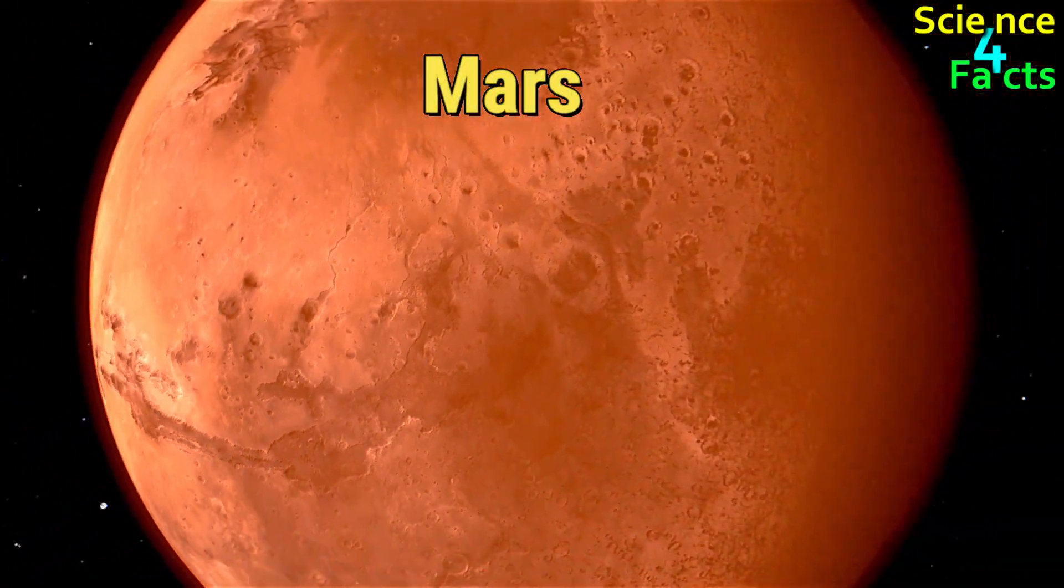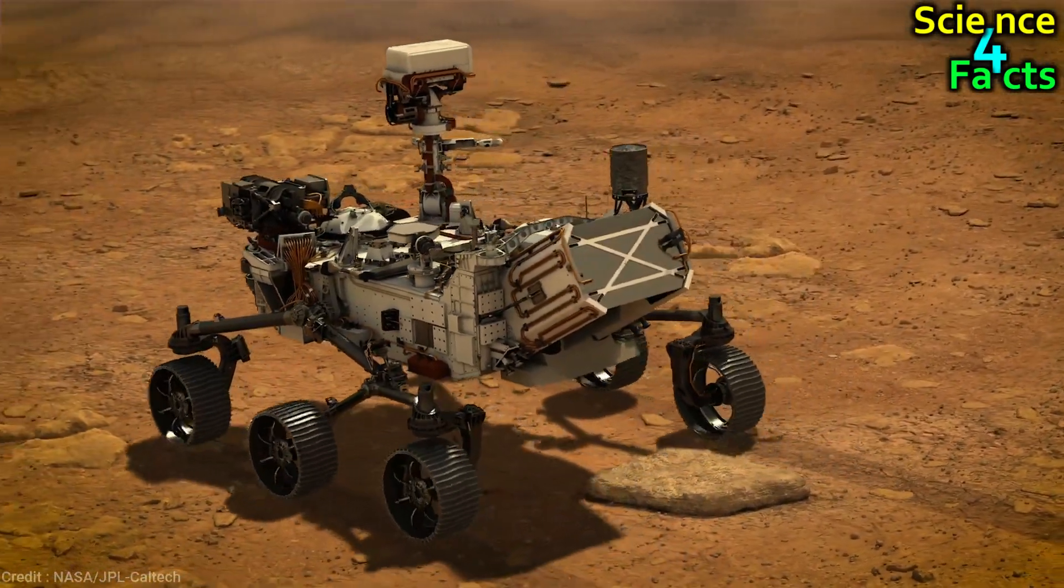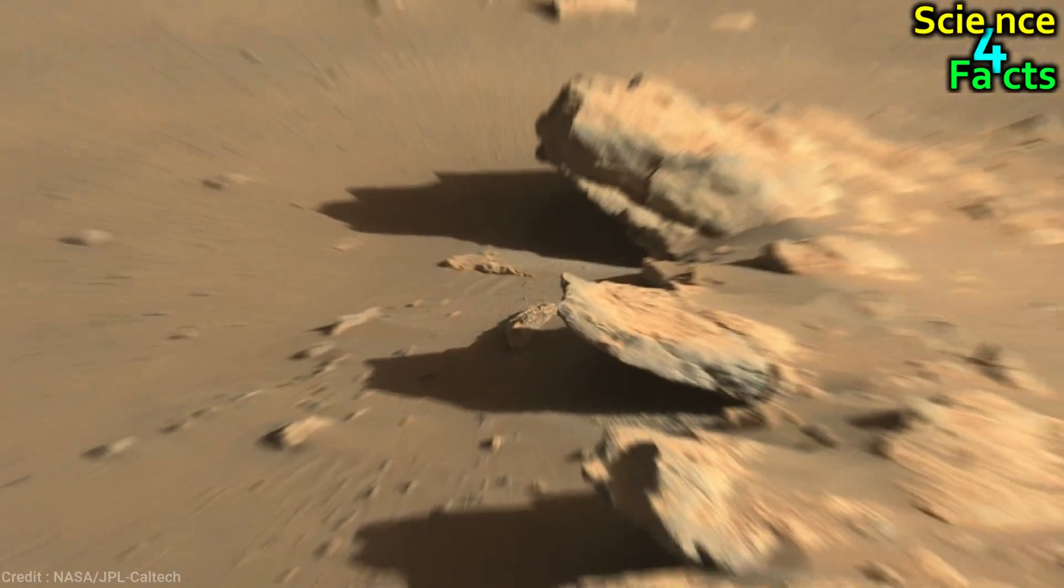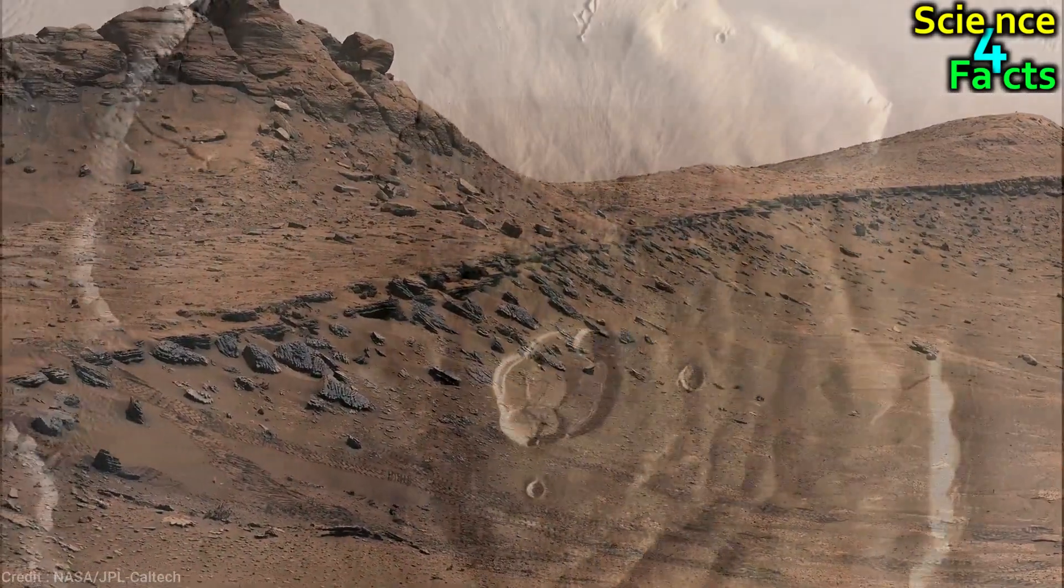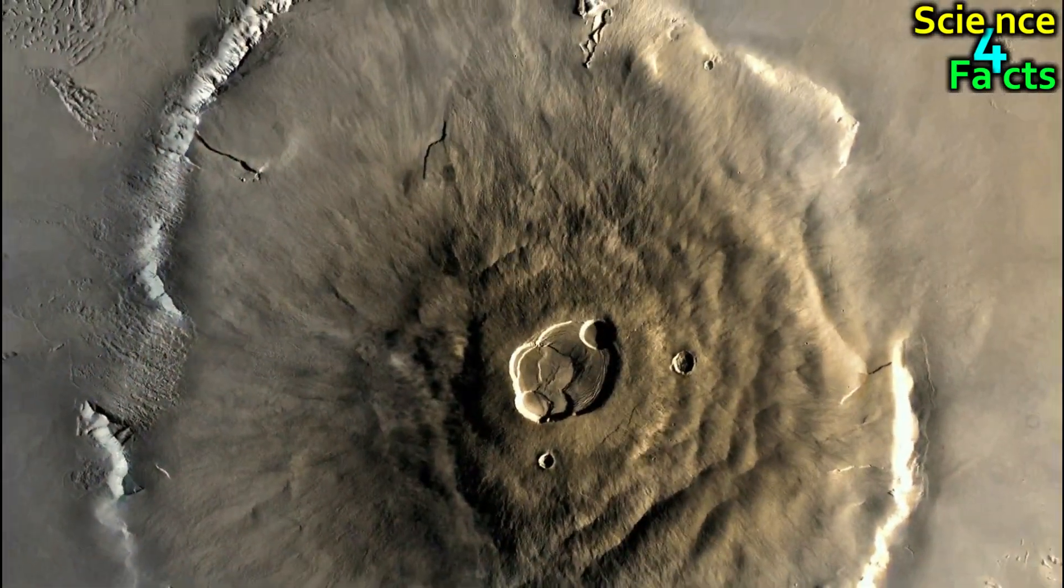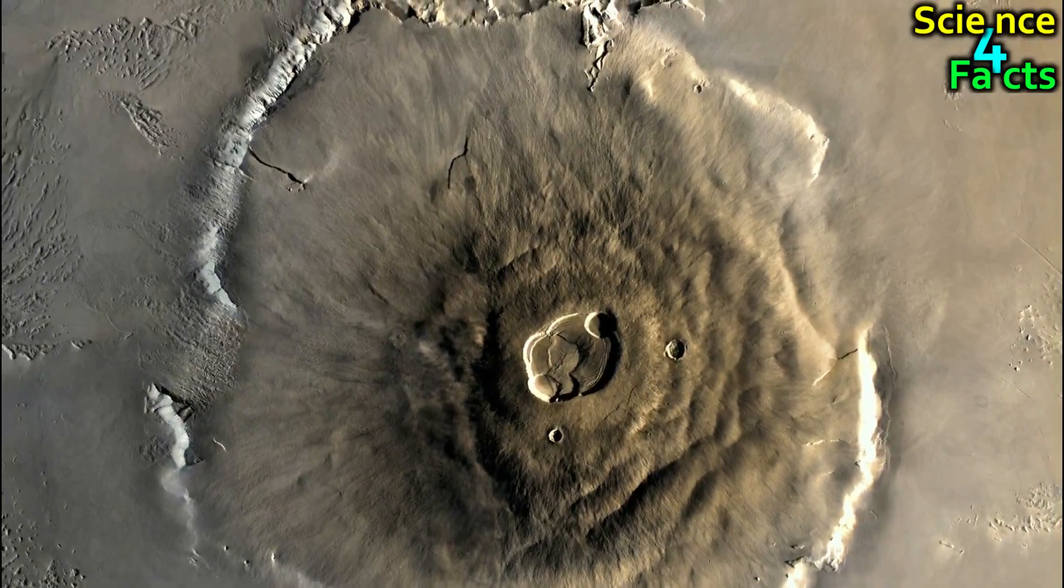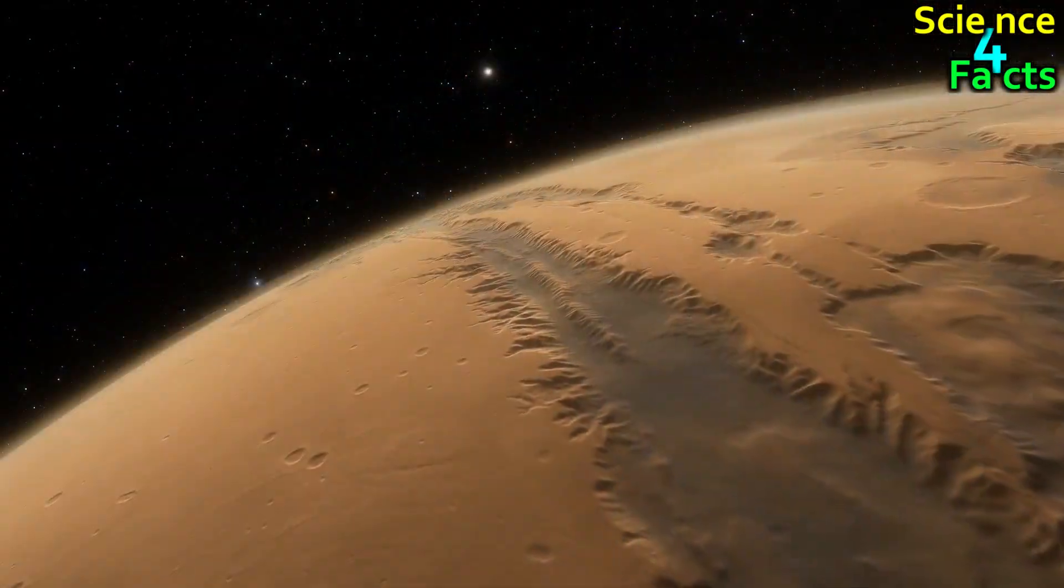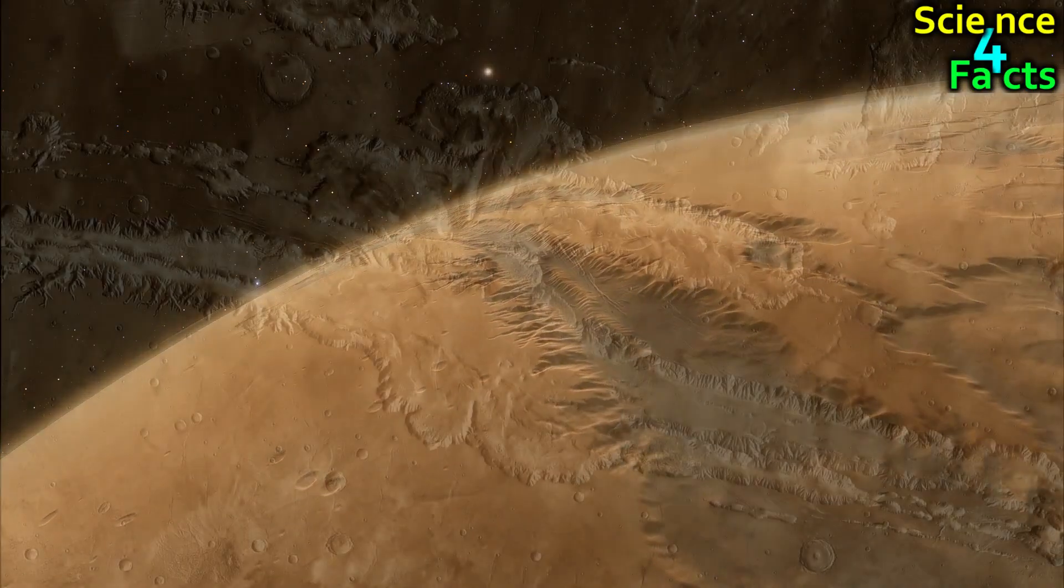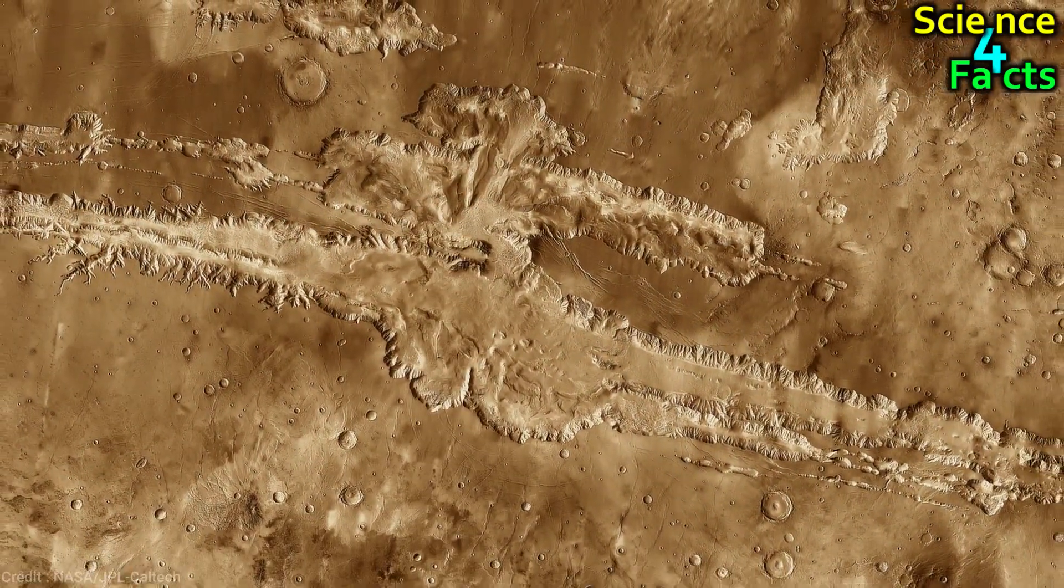Mars is the fourth planet from the Sun and is often referred to as the Red Planet due to its reddish appearance. The surface of Mars is rocky and dusty, with vast deserts and canyons stretching across the planet's landscape. The planet is home to towering volcanoes, including Olympus Mons, the largest volcano in the solar system, as well as deep canyons such as Valles Marineris, which is the largest canyon in the solar system.